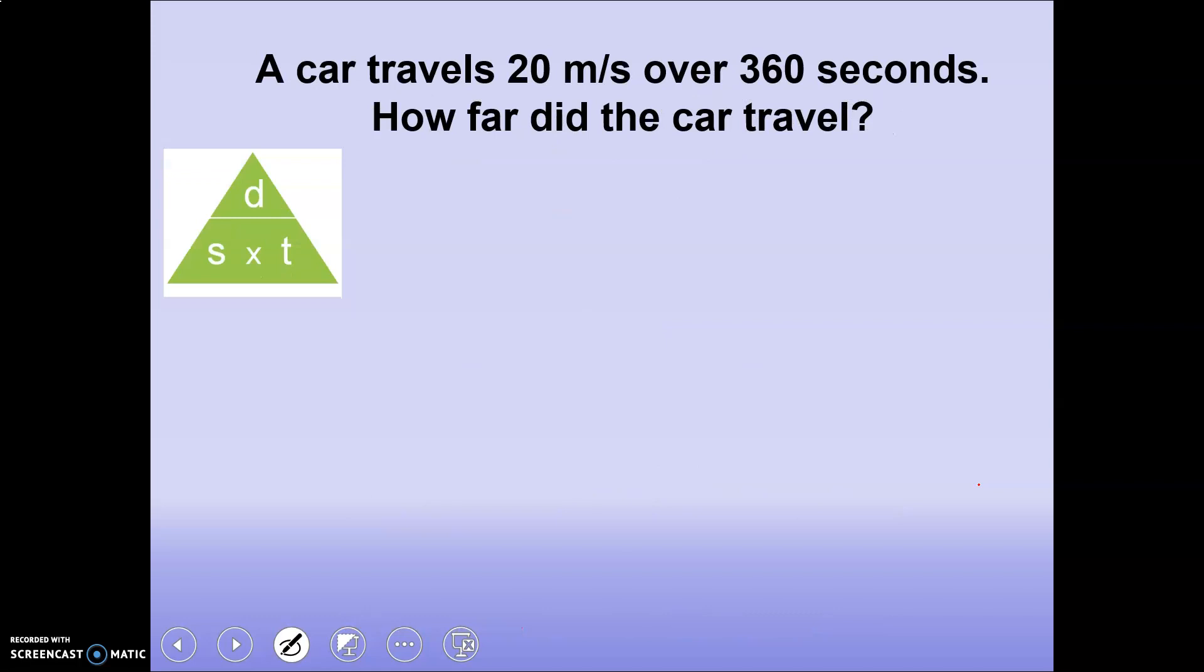All right, next problem, a little bit different. So now a car is traveling 20 meters per second. So this would be a speed over 360 seconds. How far did the car travel? So we're looking for how far, how far is distance. So to solve for distance, we're going to have to do speed times time. So we're going to have to multiply the speed and the time.